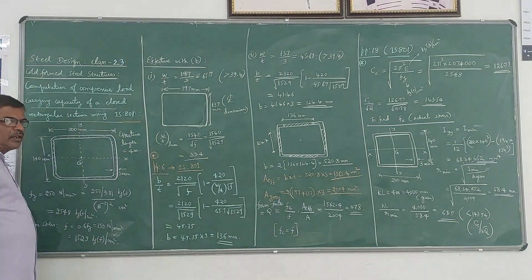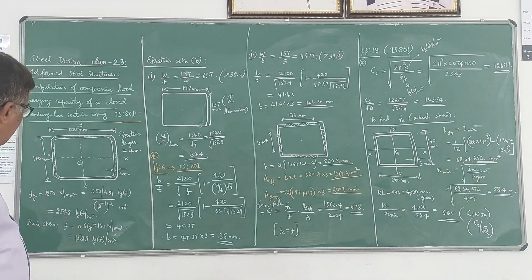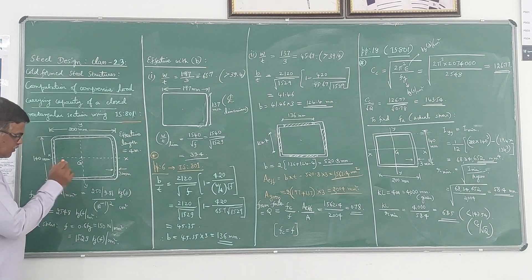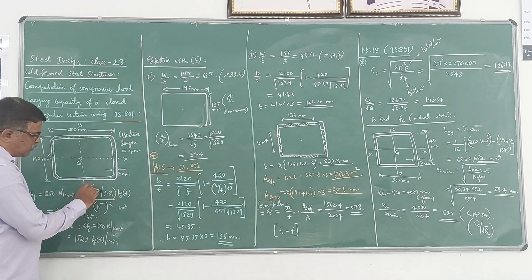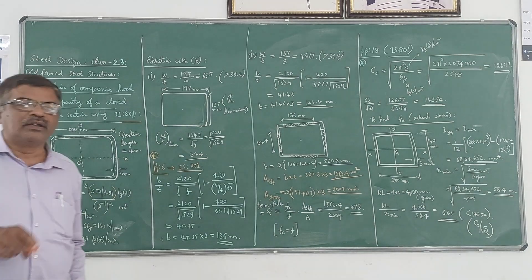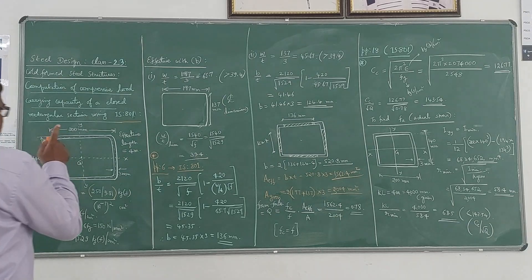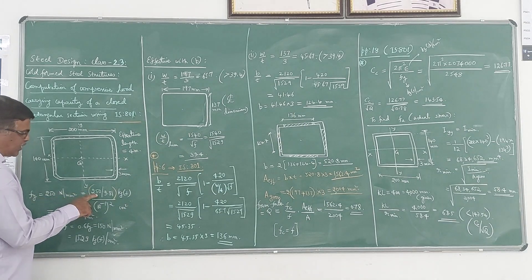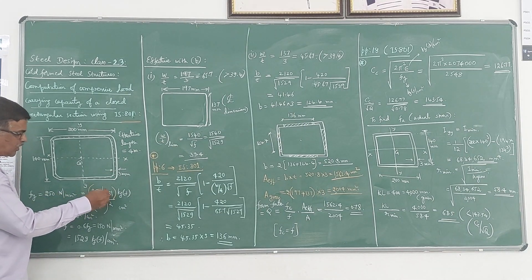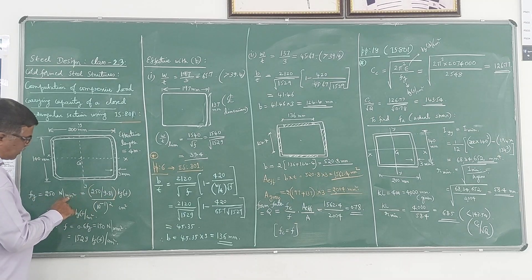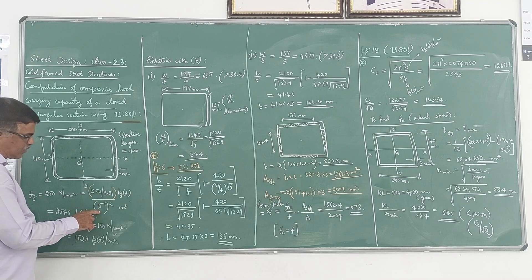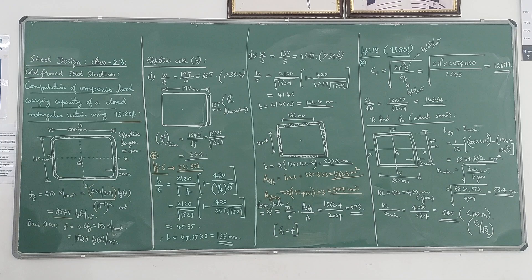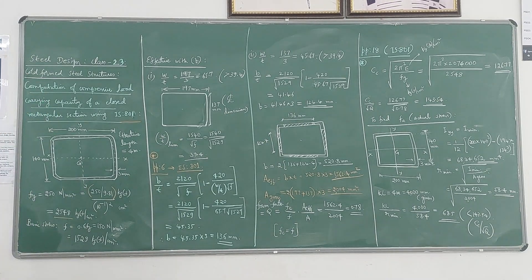We are using IS 8.1 code for computing the load value. The given Fy value is 250 Newton per mm square. We need to convert this into kg-force per cm square, because the equations in IS 8.1 express F in kg-force per cm square. The conversion is: 250 divided by 9.81 (since 1 kg-force = 9.81 Newton), divided by (0.1 cm)² — simplifying this gives Fy = 2548 kg-force per cm square.